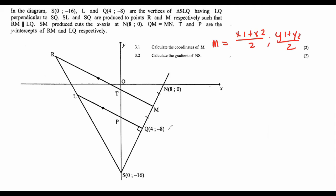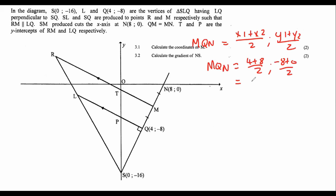I'm going to apply that formula with QN — the midpoint of QN. So the midpoint of QN is going to be equal to (4 + 8)/2 and (−8 + 0)/2. If you work that out, you're going to get 6 and −4. So 6 and −4 are the coordinates of M.